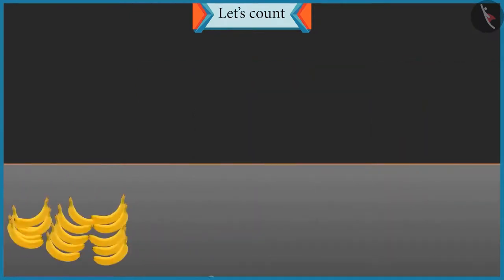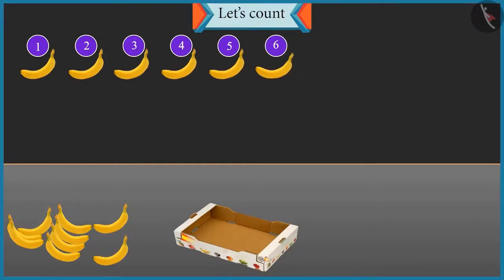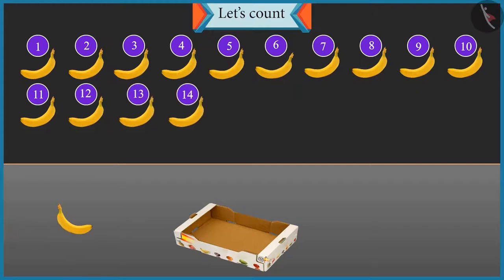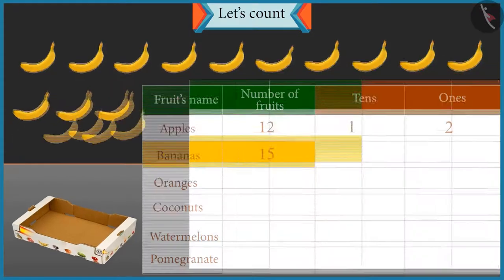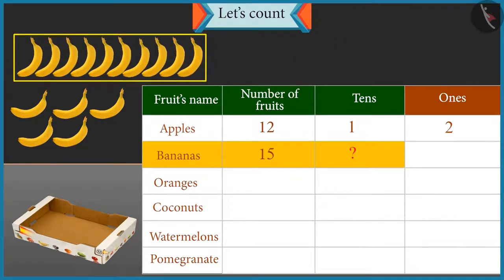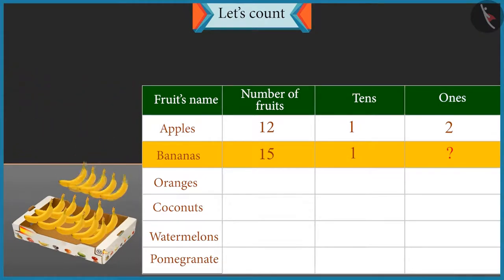Now count these bananas and place them in the second box. One, two, three, four, five, six, seven, eight, nine, ten, eleven, twelve, thirteen, fourteen and fifteen. There are fifteen bananas. How many tens are there in fifteen? A group of ten will be formed, so there is one tens in fifteen. And how many ones are there? There are five bananas left, so there are five ones. Well done, Chotu.